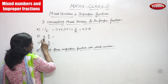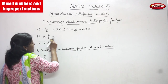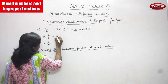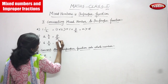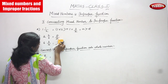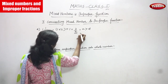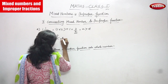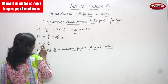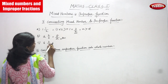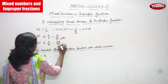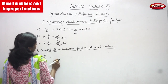Next, the same method: 2 into 3 gives 6, and 6 plus 2 gives 8. So 8 by 3 is the answer for this question. Then, 6 into 10 gives 60, and 60 plus 3 gives 63. So 63 by 10 is the answer for this question.